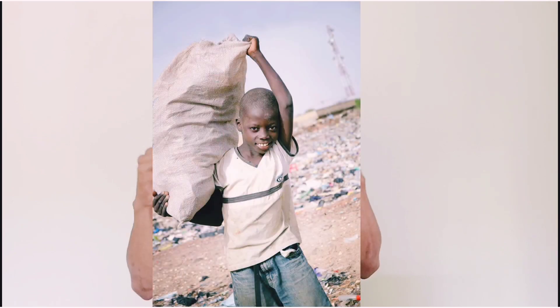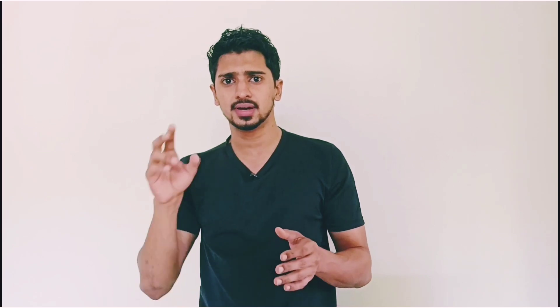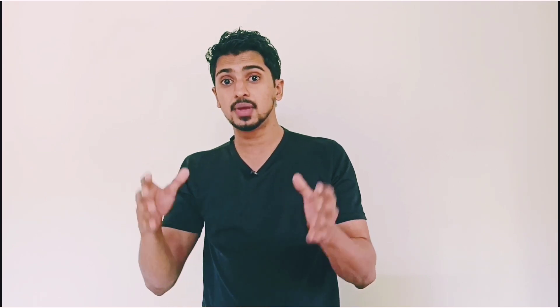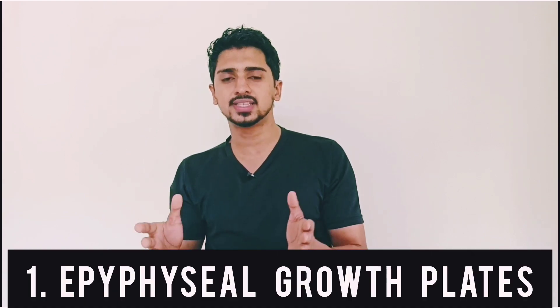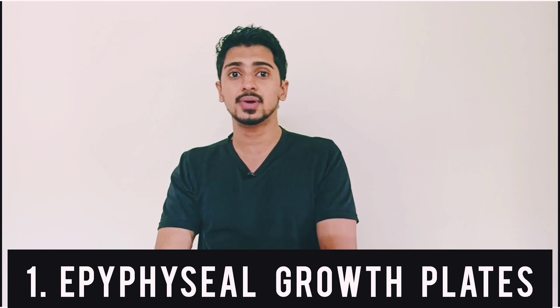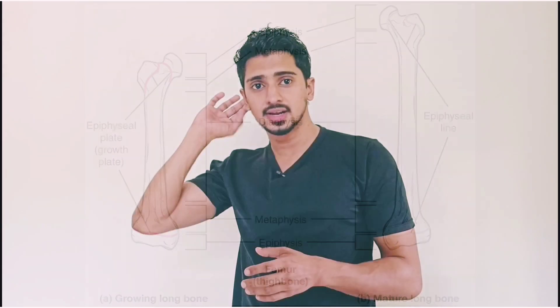We are going to talk about weightlifting and heavy weightlifting, and two terms: the epiphyseal growth plates. These are in our bodies — they are called growth plates — and we are using this as a soft cartilage-based structure.